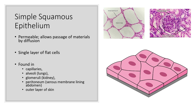You can find simple squamous epithelium in capillaries, the alveoli of the lungs, the glomeruli of the kidney, the peritoneum — which is just the serous membrane lining the abdomen — and the outer layer of skin.